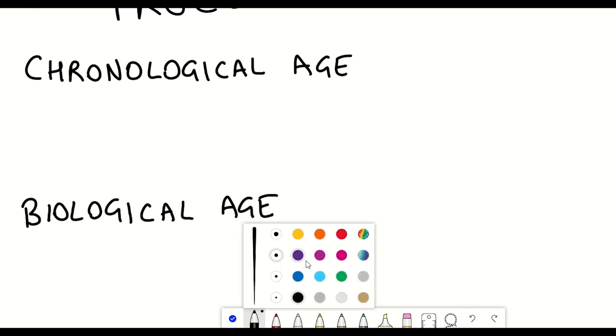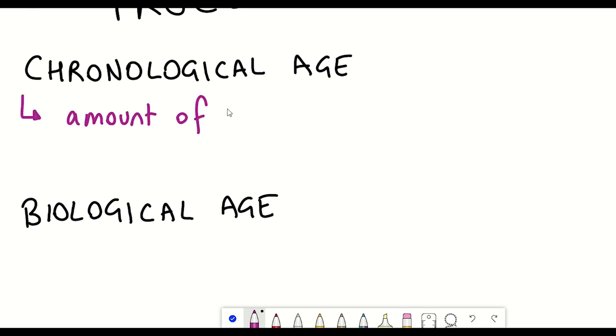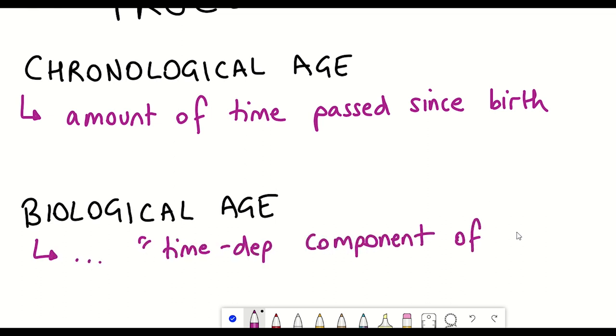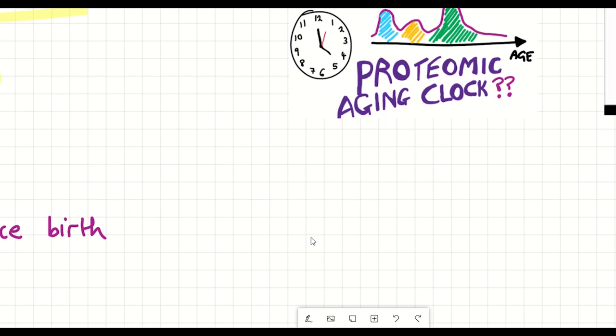So chronological age refers to the amount of time that has passed since you were born whilst biological age is a time-dependent component of an organism's overall health. And regarding studies of aging, biological age is being increasingly used because it aims to more accurately reflect aging in an individual than the conventional chronological age.